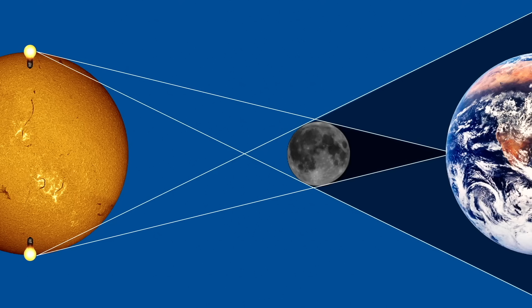This is called the umbra. From the lighter parts of the shadow, you can see the light bulbs, meaning the sun, peeking out either above or below the moon. This lighter, partial shadow is called the penumbra.